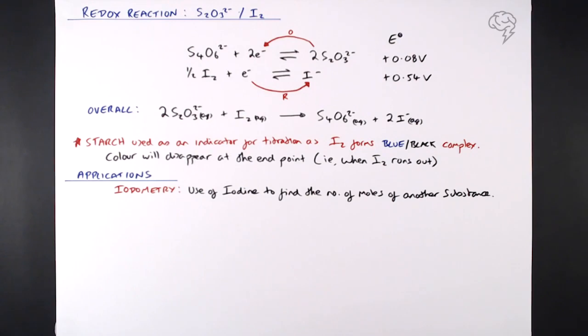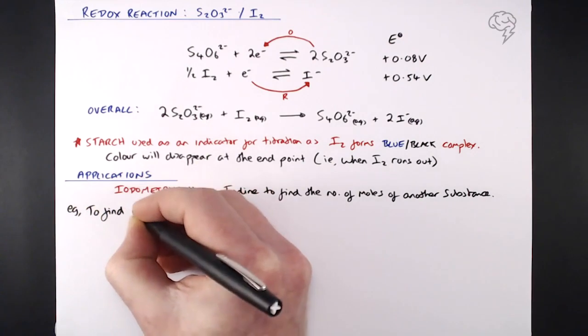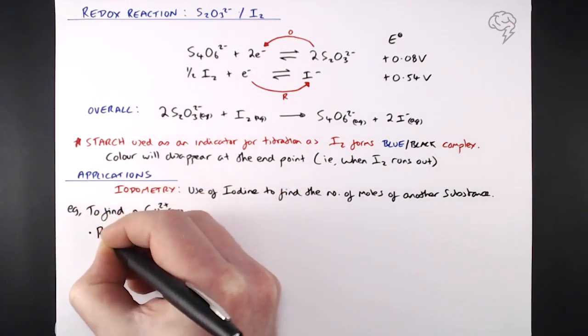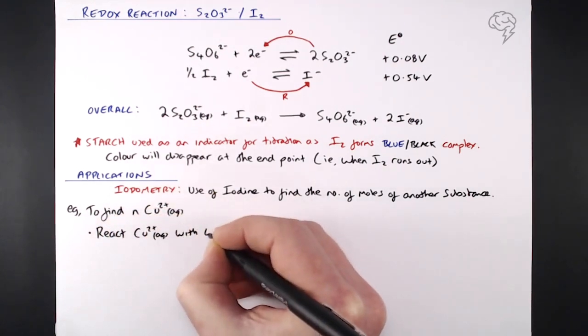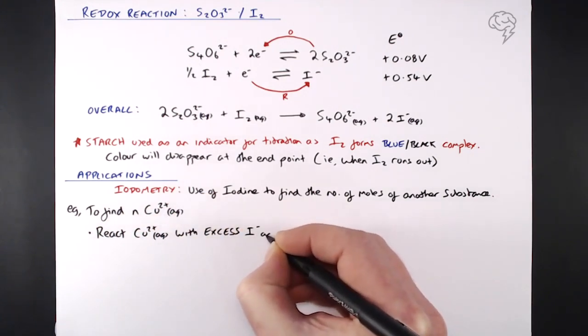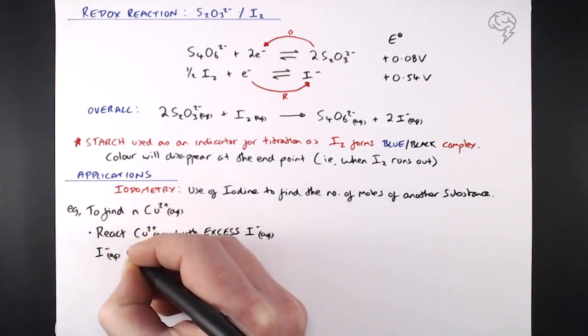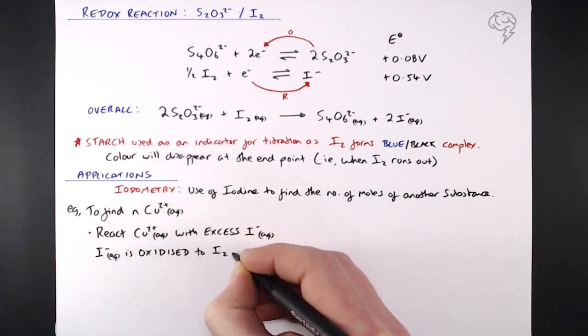Let me talk through one with you. Let's say, this is the most common one, let's say we wanted to find the number of moles of Cu2 plus in solution. So we've got a copper salt, we want to know how many moles of copper we've got in there. Well, the first thing we do is react that copper solution, the known volume of that copper solution, with excess iodide ions. Why do we use excess iodide ions? We want to make sure that all of those copper 2 pluses have been reduced. So we put a load of iodide ions in, maybe potassium iodide, and then the iodide is actually oxidized to iodine by the copper 2 pluses.